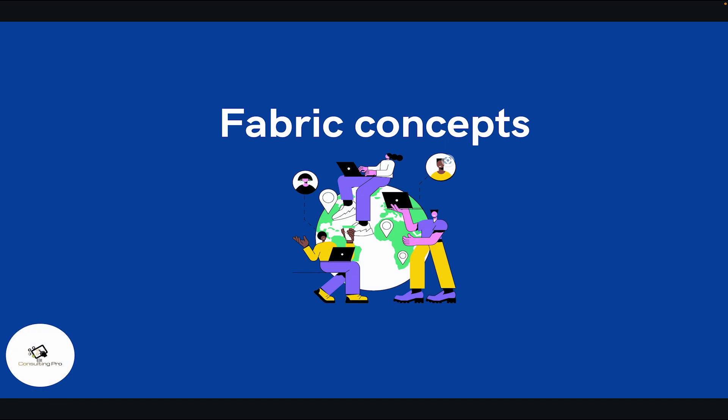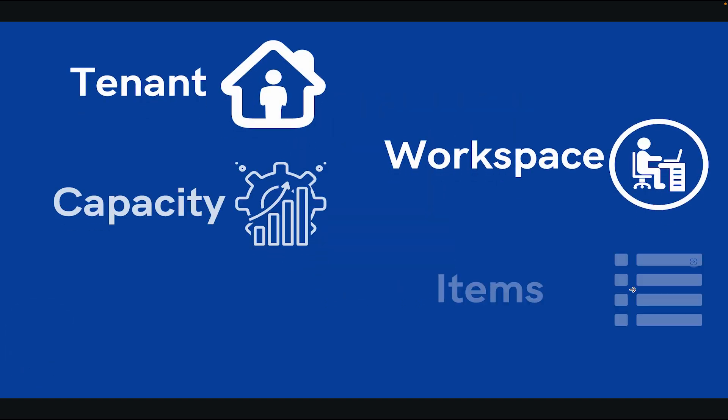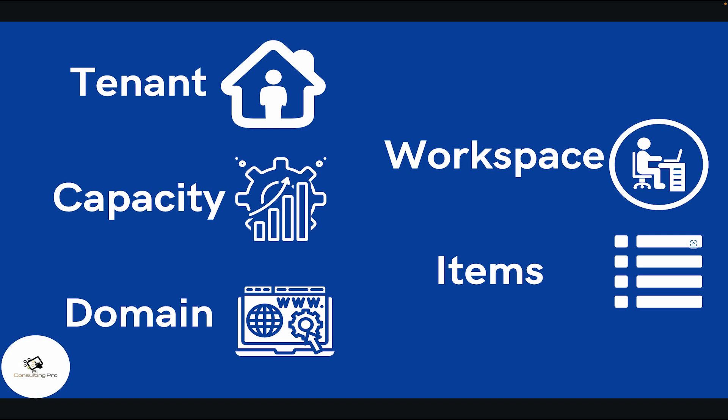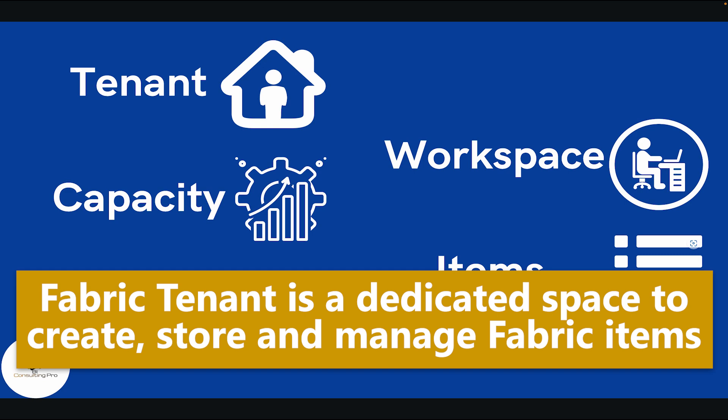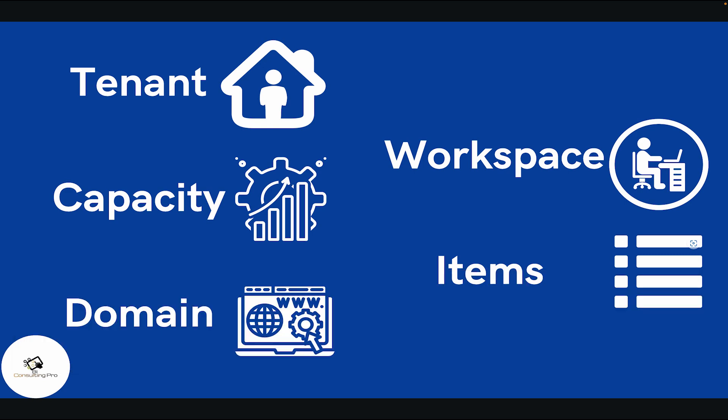Now let's talk about the Fabric concepts. The very first concept is the tenant. A Fabric tenant is a dedicated space for organizations to create, store, and manage Fabric items. Generally every organization has only one tenant, but it is not fixed — if your organization needs more than one they can have it. These tenants are aligned with your Microsoft Entra ID. The Fabric tenant maps to the root of OneLake and is at the top level of the hierarchy.